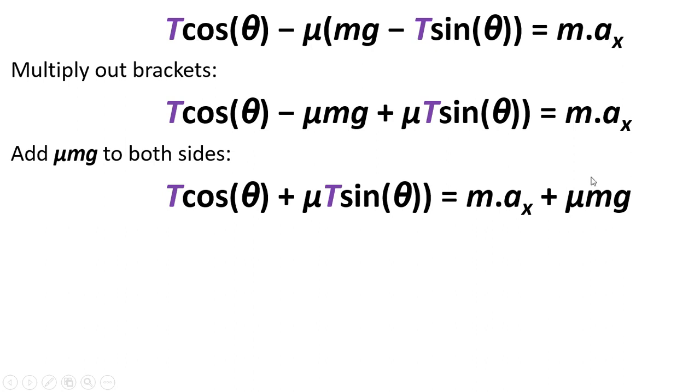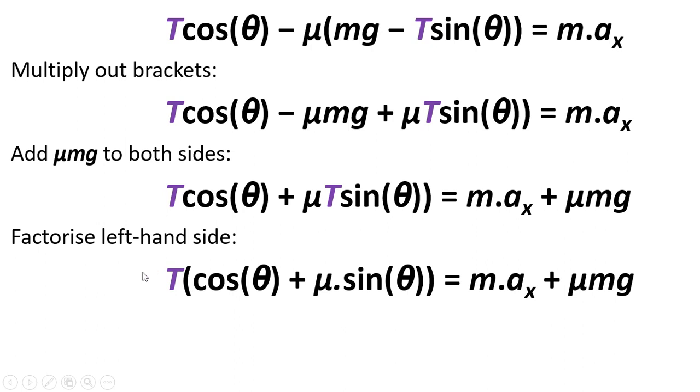The next step is to factorize the left hand side. So that T is outside the brackets. So T times in brackets cos theta plus mu sin theta is factorizing that left hand side. The right hand side just stays the same as before.